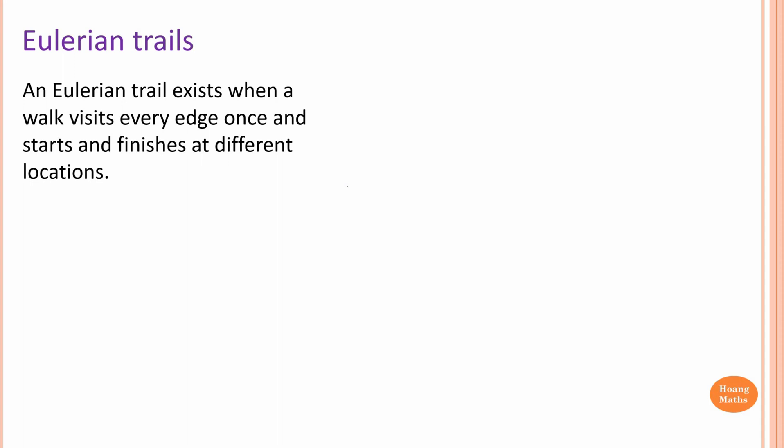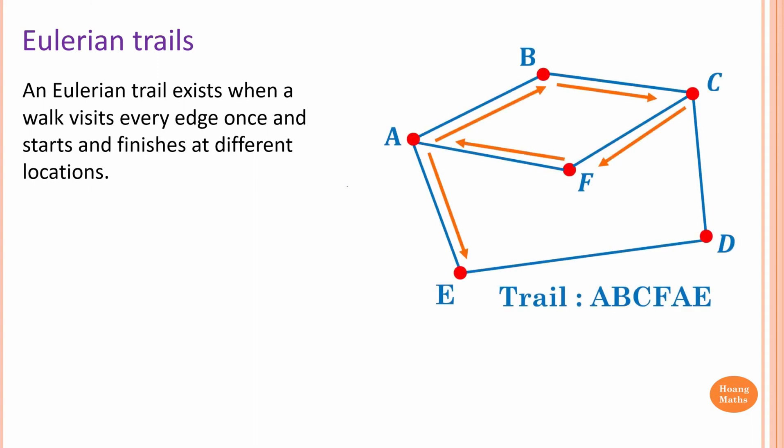An Eulerian trail is a trail that passes through every edge once and starts and finishes at different vertices. But what is a trail? A trail is a walk that passes through edges only once, but vertices might be repeated.